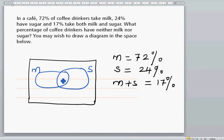You start with the innermost, so there's 17% here. This region which is inside is for the people who take milk. If you have 17 here, this region plus this region should give you 72, so I have to take away 17 from 72.